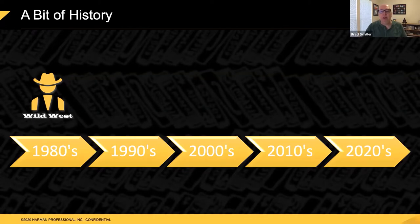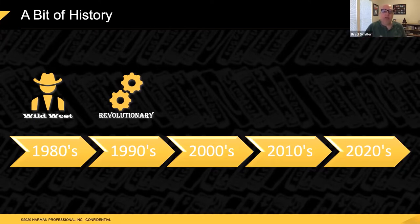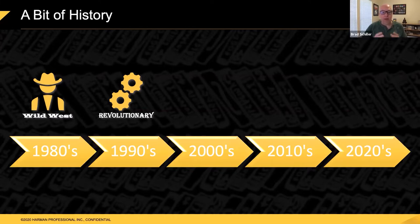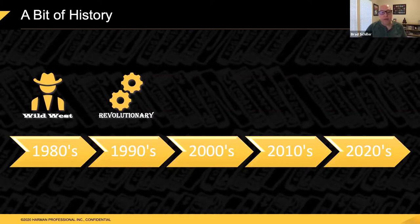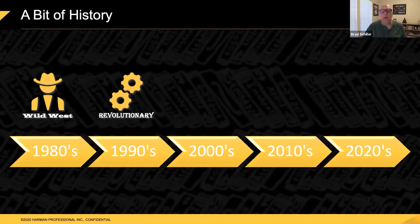As we moved into the 1990s, we started to see a lot more innovation and companies solidifying. I call this the revolutionary period. People started to realize this was a real industry — the entertainment industry was growing and accepting automated lights. They weren't just for concerts or discos — they were moving into Broadway and television. We also started to see lawsuits — very important lawsuits that had an effect on the development of lights. Towards the end of the 90s, patent barriers were broken and more companies started making moving yokes.